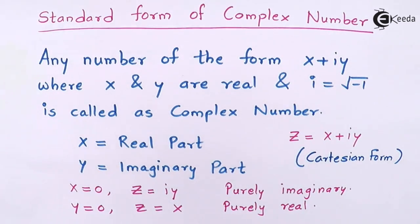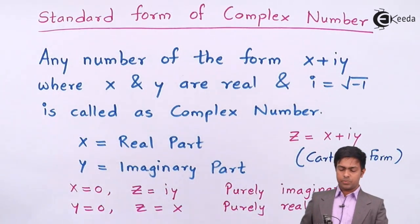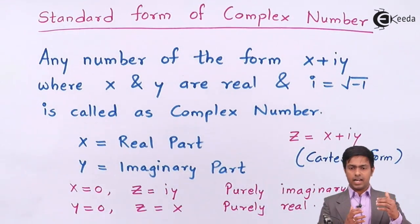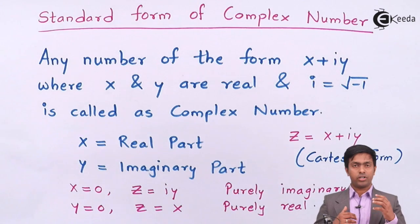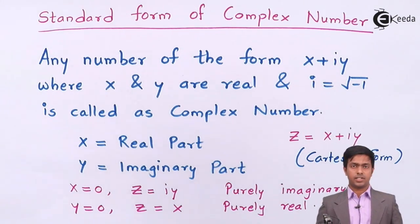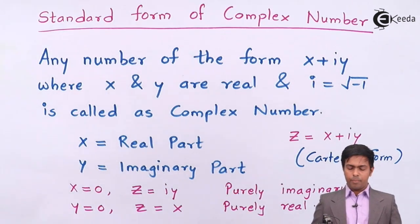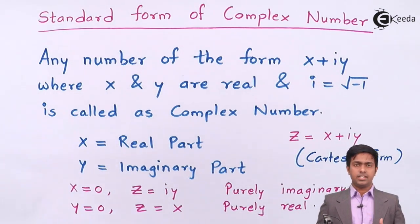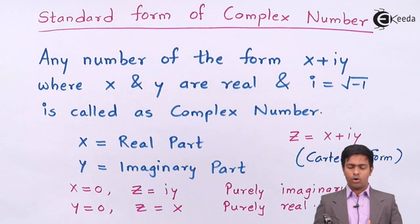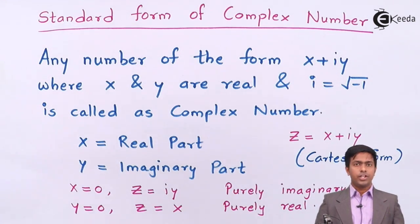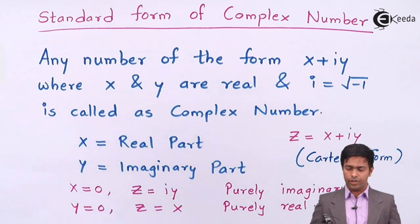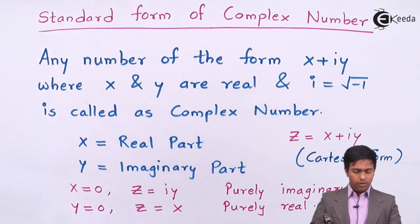So z equal to x plus iy is the standard form or Cartesian form of a complex number. Based on this, we are going to solve numericals in the following videos.